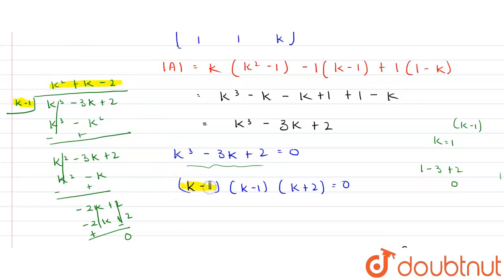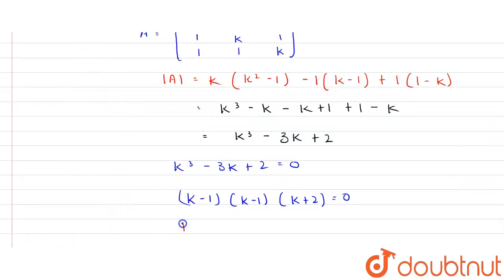So the factors of the cubic are (k - 1) and (k² + k - 2), which factors further into (k - 1) and (k + 2). Equating with zero gives two values: k = 1 and k = -2.